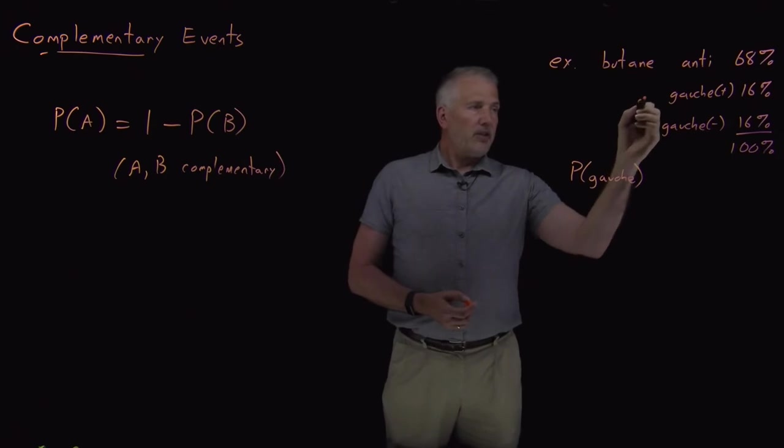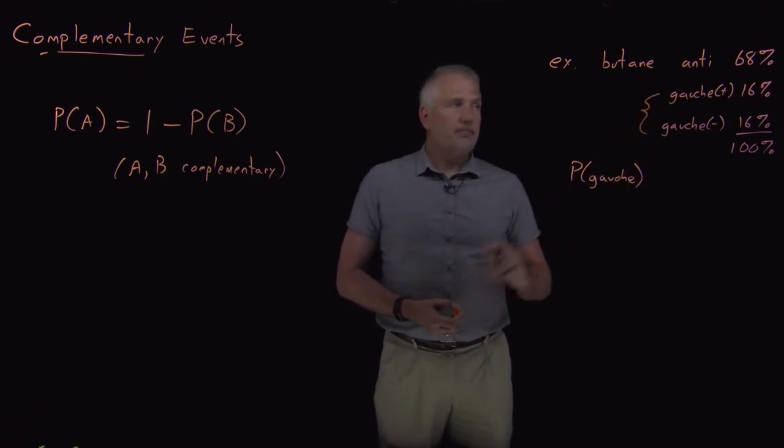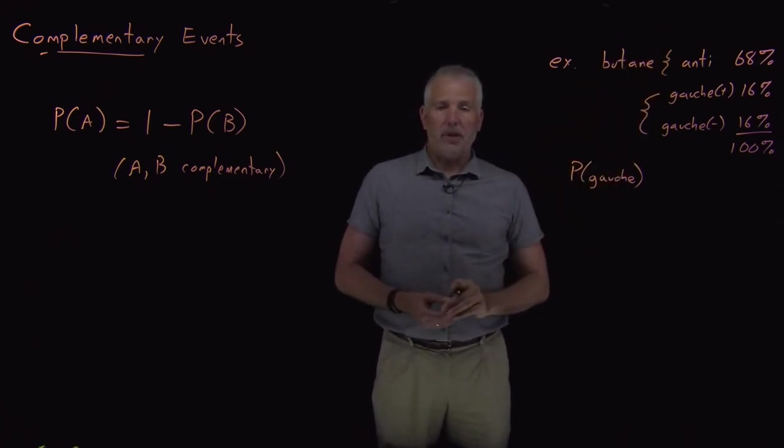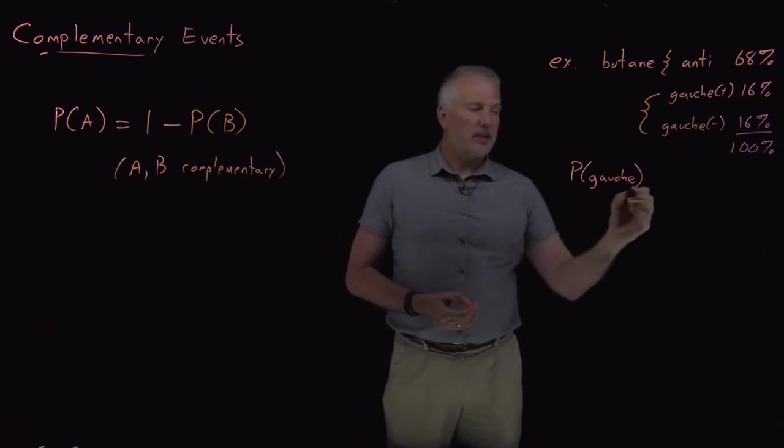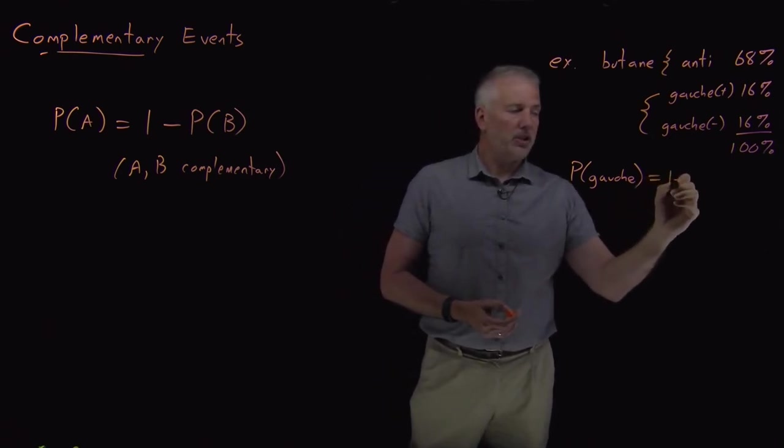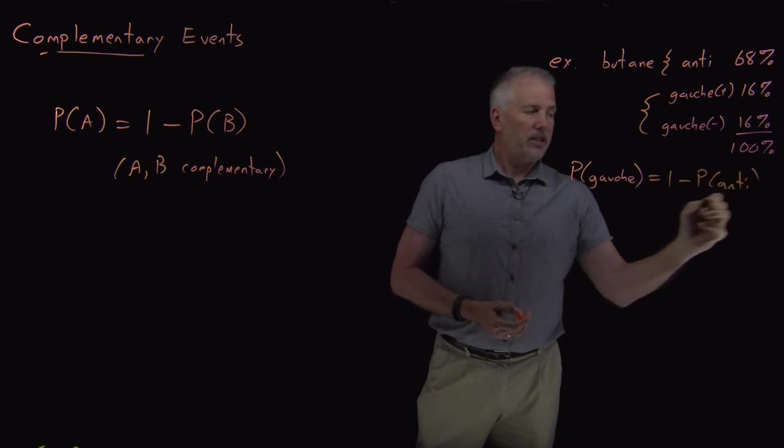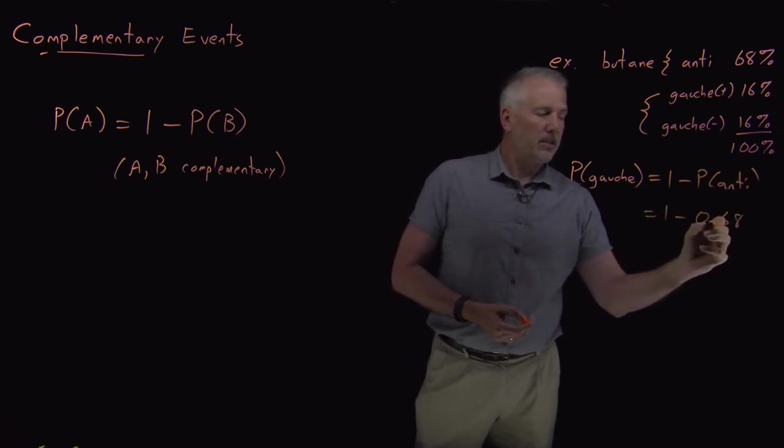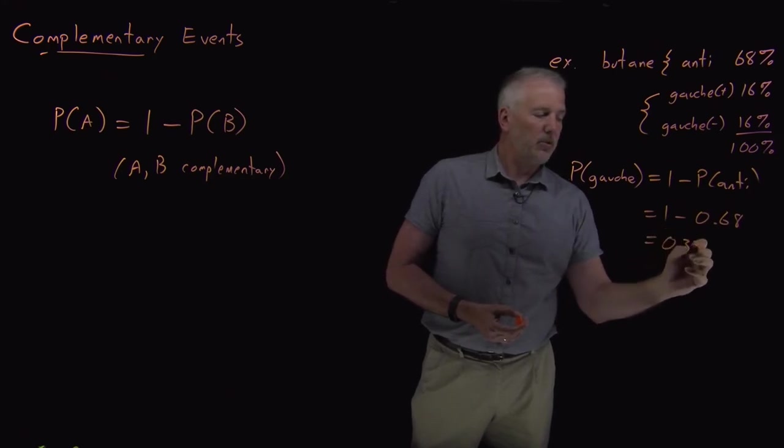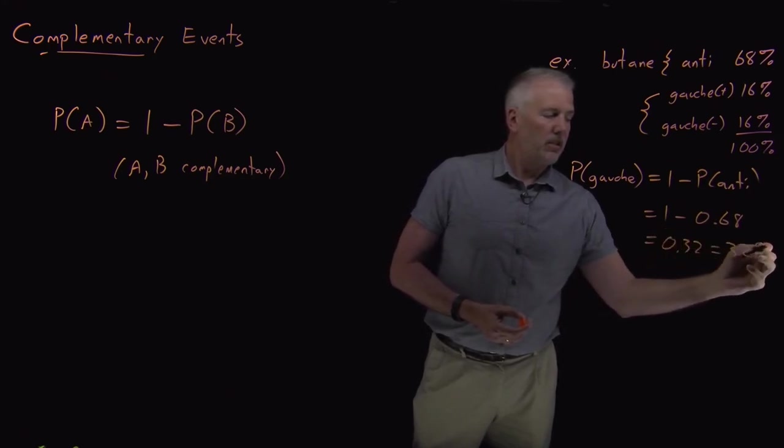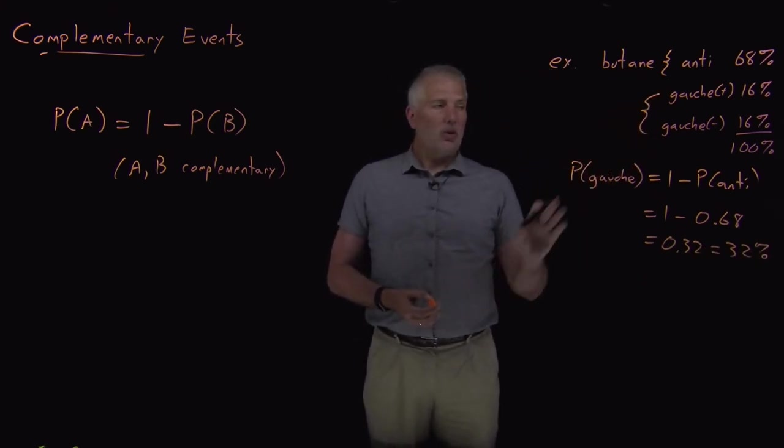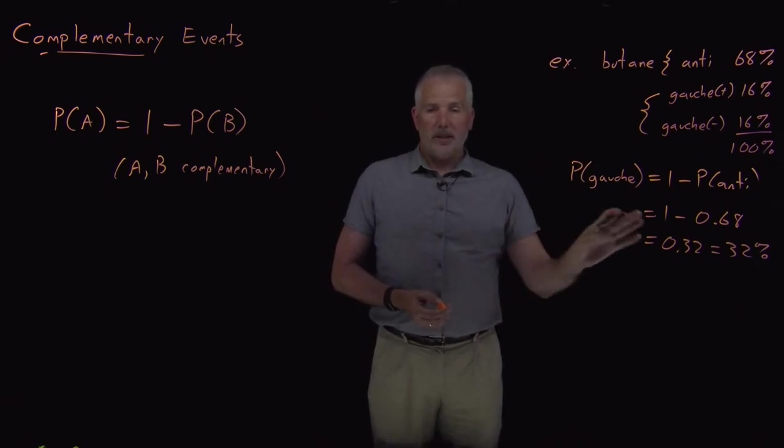There's another way to do that, which is to say that either the molecule is in a gauche confirmation or it's in an anti-confirmation and between those two, gauche or anti, they cover all the different possibilities. So, those are complementary events and we can say that the probability that it's gauche is one minus the probability that it's anti or one minus 68, 0.68 gives us 32 or 32%. So, whichever way we think about it, either as mutually exclusive events or as complementary events, we get the same answer, of course.